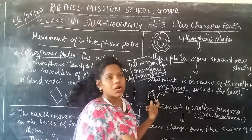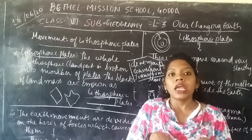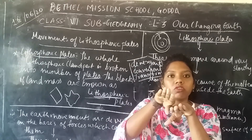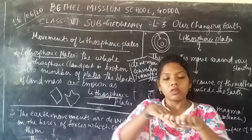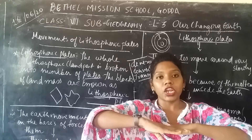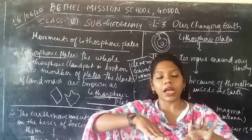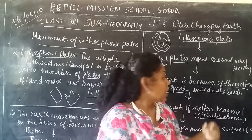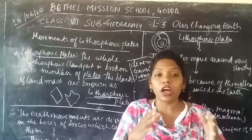The third type is the transform movement. In this, the lithospheric plate changes its form — it can move upward, sideways, or slide in different directions such as up and down or forward and backward. It does not move in the same plain direction. That is why it is called transform. These are the three ways of movement of the lithospheric plate.